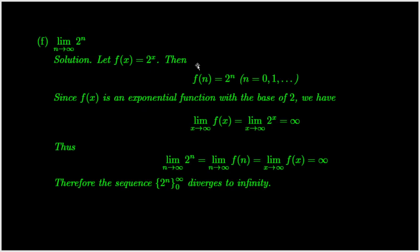We now work on question 5f. Let f of x be as shown. Then the values of the function f at all whole numbers form the given sequence. Using techniques we've learned, as x approaches infinity, the limit of the function is infinity. This means that the function values are arbitrarily large when x values are sufficiently large. Therefore the limit of the sequence equals infinity. In this case, we say the sequence diverges to infinity.